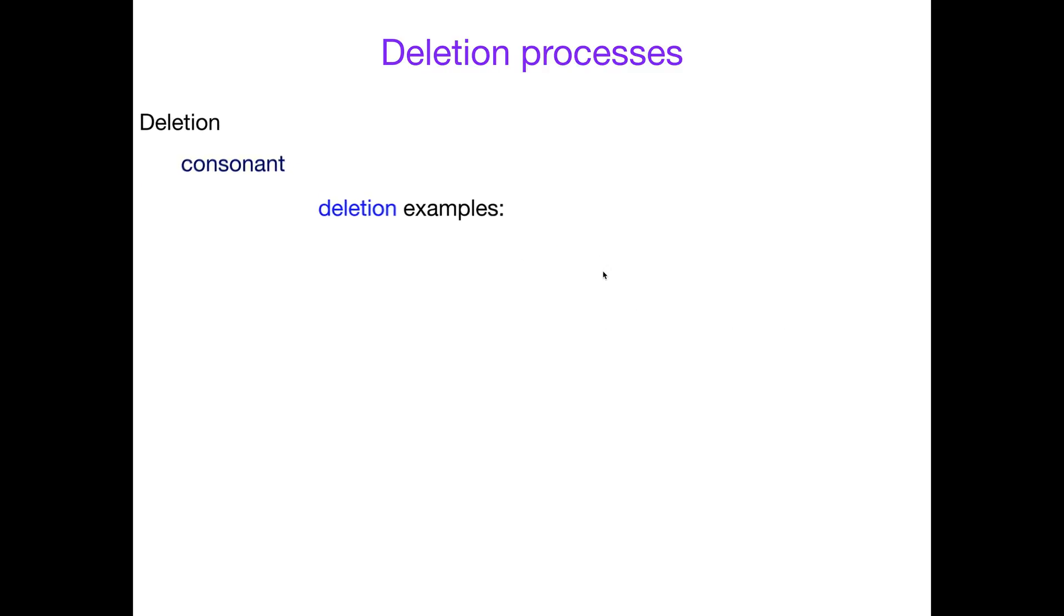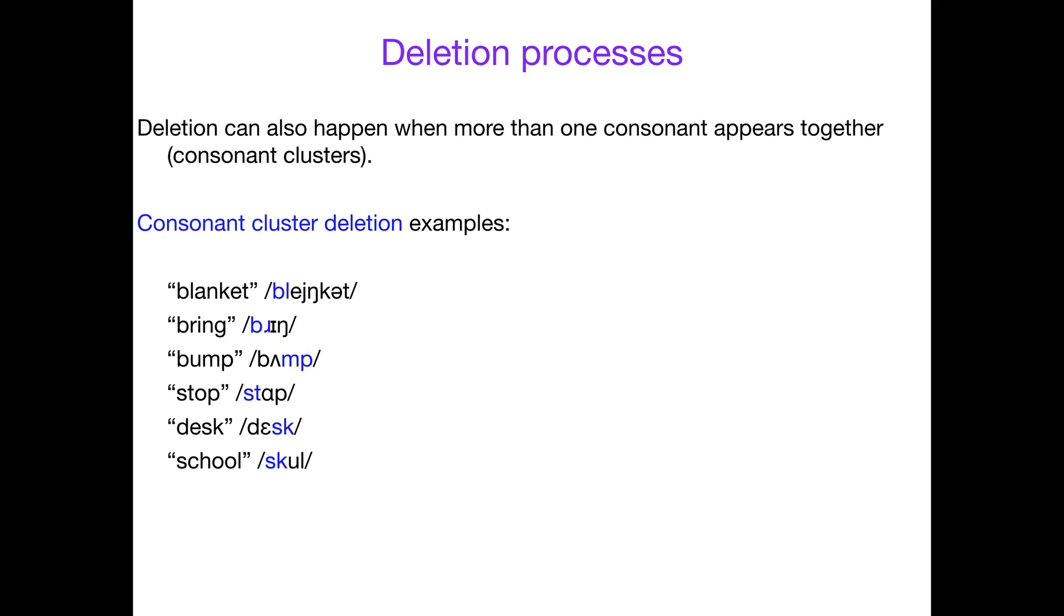Another deletion process happens when more than one consonant appears together—a consonant cluster. These are kind of hard to pronounce, so what happens is kids delete one or the other. Here are some consonant cluster deletion examples. I've highlighted in blue some example consonant clusters, that is, a sequence of two or more consonants in a row.